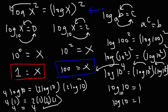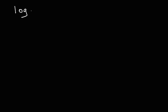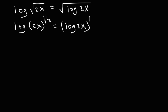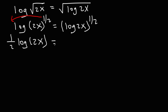Now let's move on to our second example: log of the square root of 2x equals the square root of log 2x. The square root of 2x is the same as 2x raised to the 1/2 power. The square root of log 2x can be rewritten as log 2x raised to the 1/2. On the left, we can move the exponent to the front, giving us 1/2 log 2x. On the right, we can't move that exponent, so we just rewrite it for now.